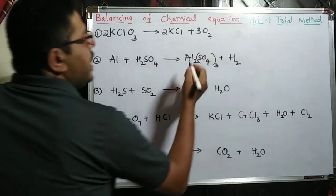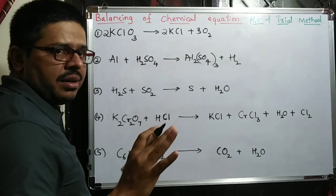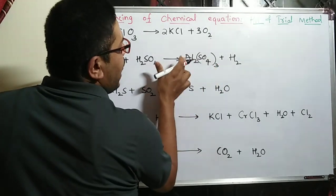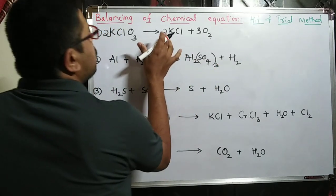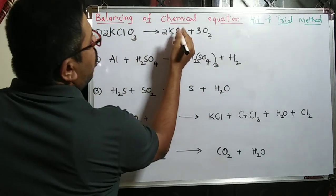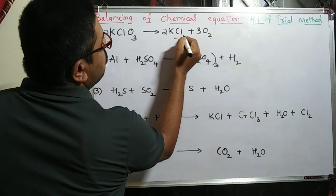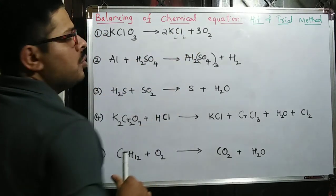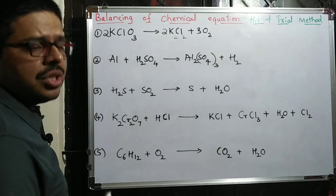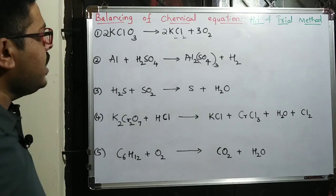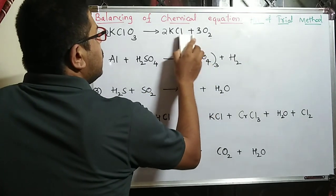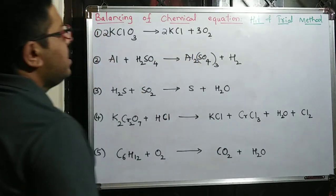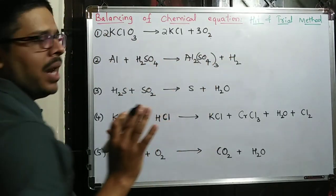Hence Al2(SO4)3, as written, cannot have anything changed inside. You cannot add any number inside the formula. Similarly, you cannot write K2Cl2 by changing subscripts — that is wrong. So you can only add coefficients before the molecule. This is the first reaction balanced.